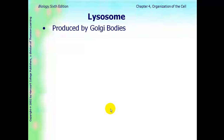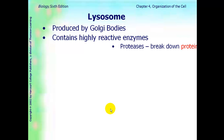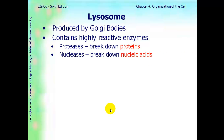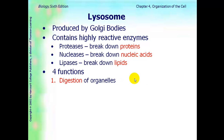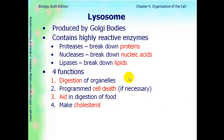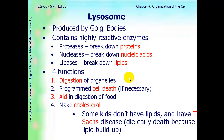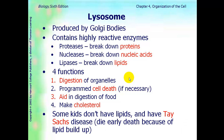The next organelle is the lysosome. Lysosomes are produced by Golgi bodies. They contain highly reactive enzymes like proteases, nucleases, and lipases — all named for the type of macromolecule they break down. There are four functions of a lysosome: digestion of organelles, they can kill the cell if needed, they aid in digestion of food, and they can make cholesterol. Some kids don't have lysosomes, and because they don't have lysosomes they can't break down lipids — that condition is called Tay-Sachs, which we'll talk more about in genetics.